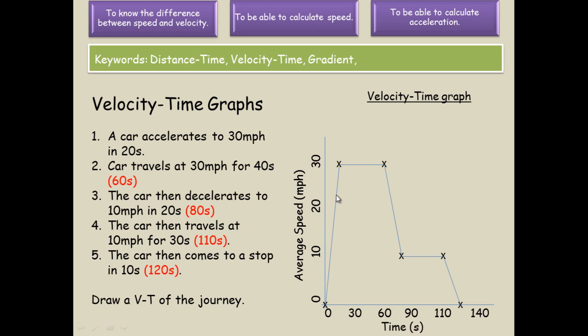Part one is that section there, two there, three there, four there, five there. In the red here is the time taken in total at each point. That is 20 seconds, that would be 60 for 2, this would be 80, 110 and 120.